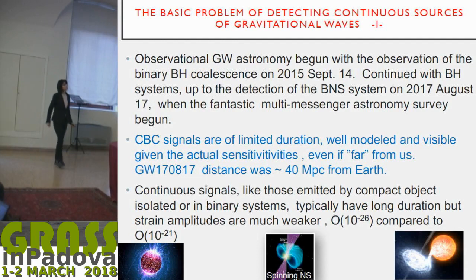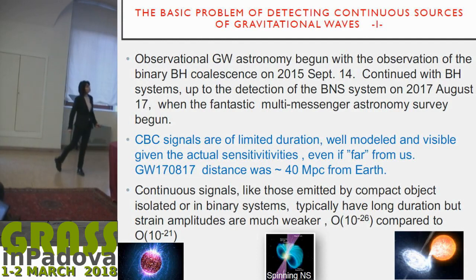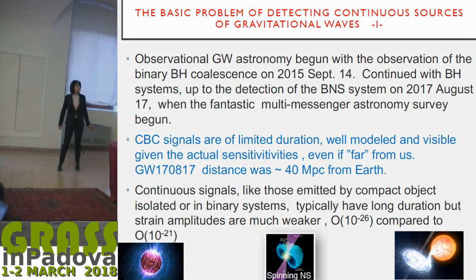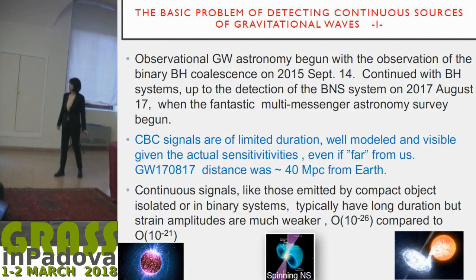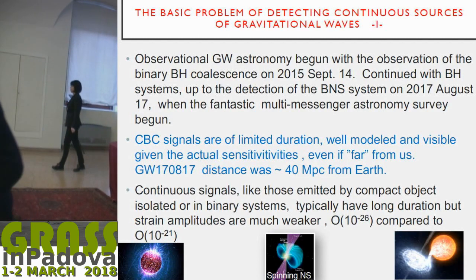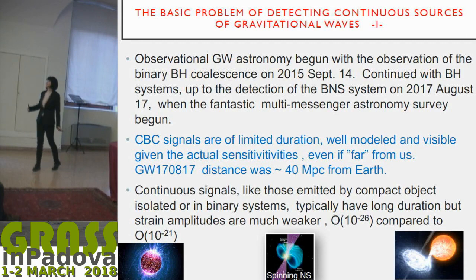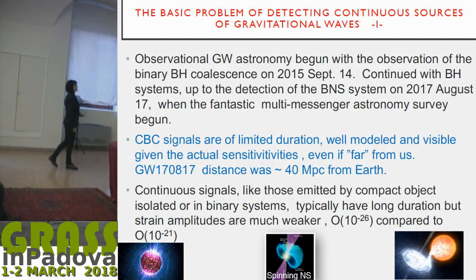What is the basic problem of this kind of sources, which I've called the continuous sources? It means that they are sources which emit for very long times compared to the typical observing runs. So their signal stays there for months, years and so on — very different from transients.